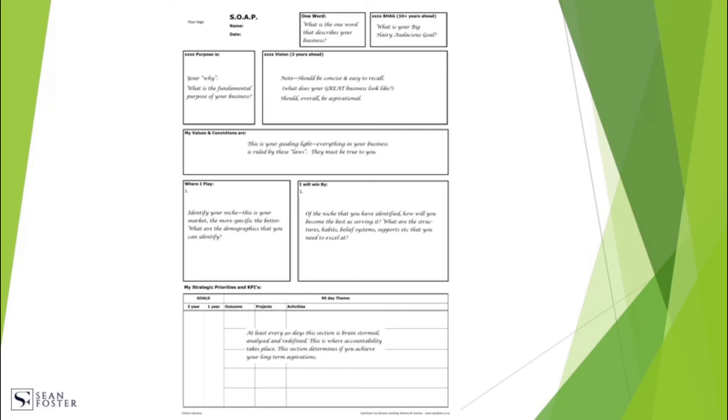The middle portion is all about identifying where and how you are going to win in the marketplace. How are you going to be among the top 20% of businesses in your sector? The ones that are making all the profits. The last bit is about your 90 day plans. What are the outcomes, projects and activities that you are needing to implement?